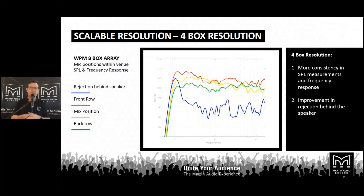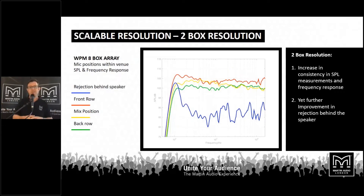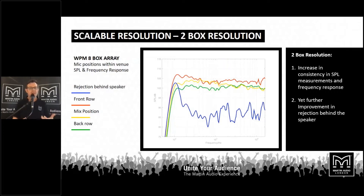Moving up to two-box resolution, we've begun to get a little bit more control over the low mid. We typically set sounds to drop off by 3 dB as you move back in the audience space, as it gives a more natural response. You can see that beginning to happen — still a little louder at the front, but as we go back it's dropping off in a uniform manner. And we've got another step down in level underneath and behind the loudspeaker.